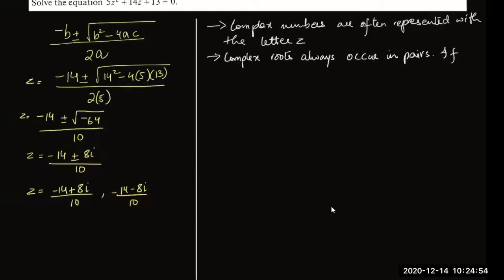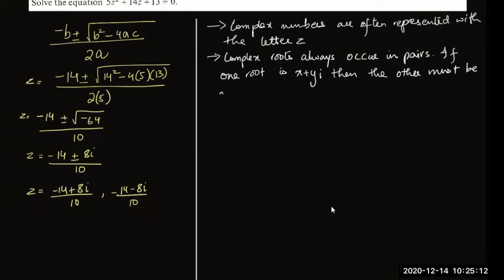If one root is x plus yi, then the other must be x minus yi. These two are conjugates of each other.